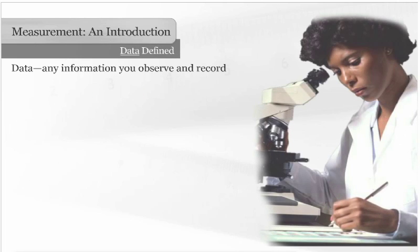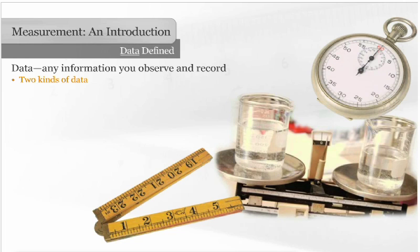Data refers to any information you observe and record in science. You can observe and record information from an investigation, experiment, or field trip. There are two kinds of data.